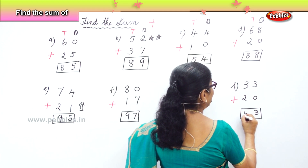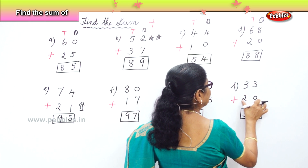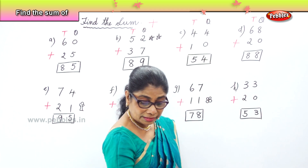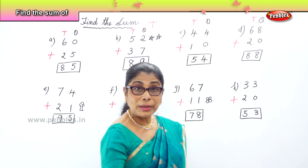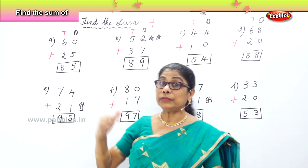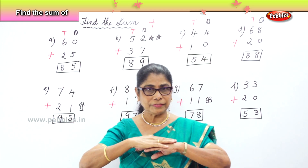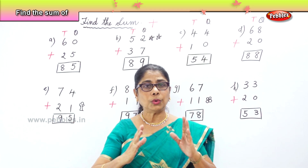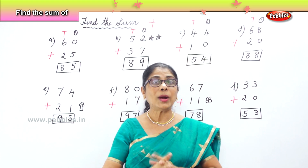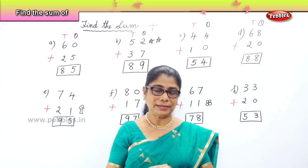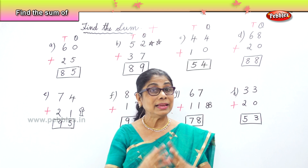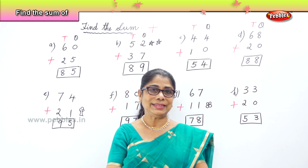The sum of 33 plus 20 is 53. We learned today to find the sum of two sets of numbers. We always add the ones first, and any number plus 0 is the number itself.